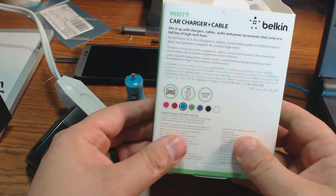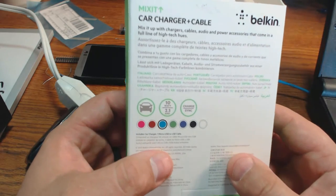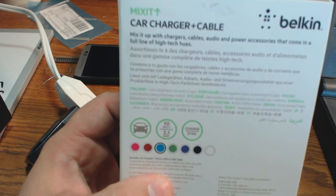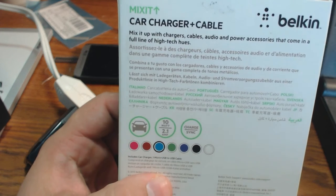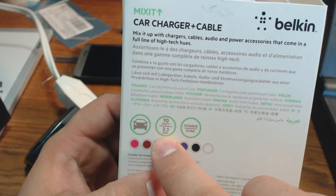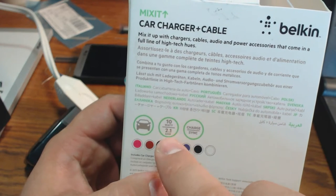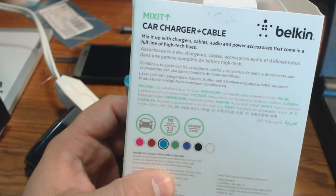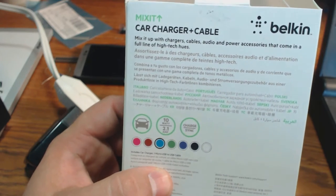Well, if we look at the back here, let me see if I can focus on that a little better so you can see it. There we go. If you look right here, it's rated at 10 watts or 2.1 amps. So this is on the 5-volt side. This is what is supplied to your phone.